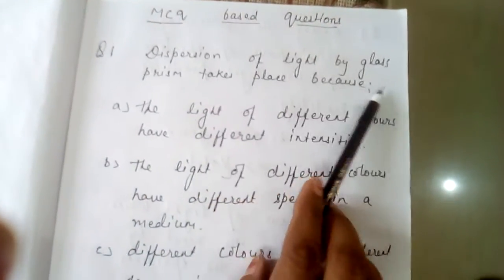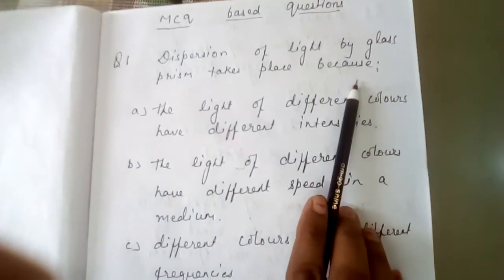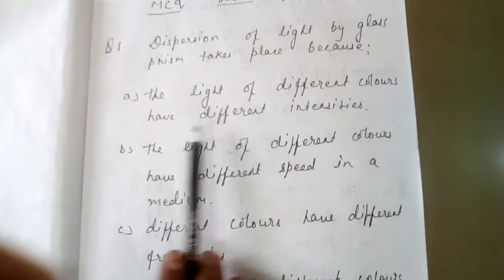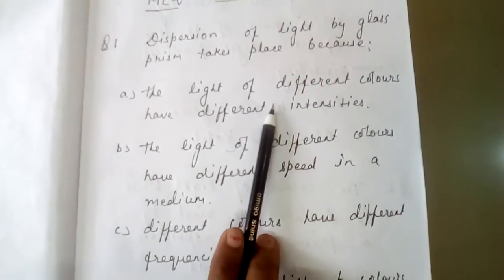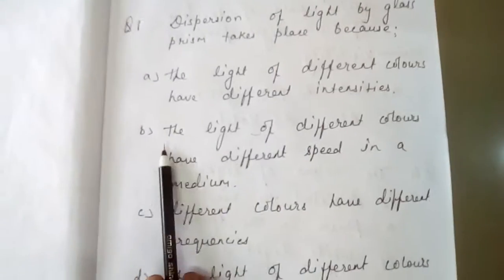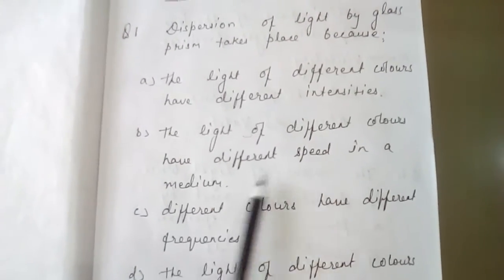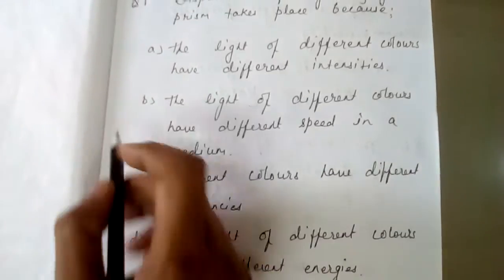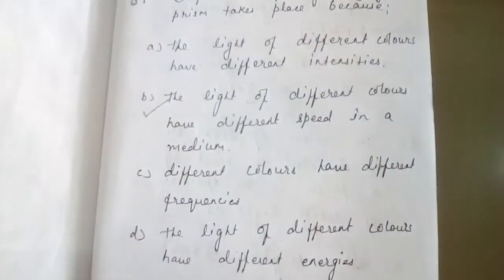First question: dispersion of light by a glass prism takes place because — first option, the light of different colors have different intensity. No, it is wrong. Second option, the light of different colors have different speed in a medium. Yes, we have studied this one. This is our right answer.